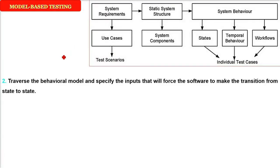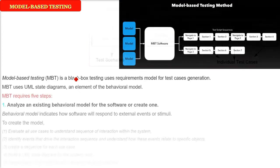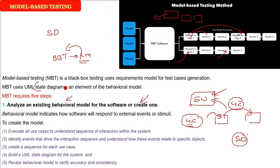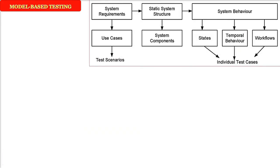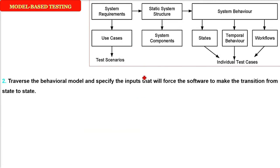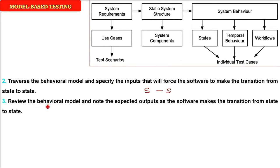The second step is, because already we have made behavioral model and the state diagram is the basis. So we have to traverse this behavioral model and then we have to specify the inputs that will enforce, that will change the software from state to state or transit from state to state. Then we have to review the behavioral model and see what are the expected results.